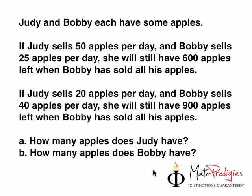Let's read the first statement again. If Judy sells 50 apples and Bobby sells 25 apples, which basically states Judy to Bobby is actually equals to what ratio? What's the ratio? 2 to 1, you're right. Good job.